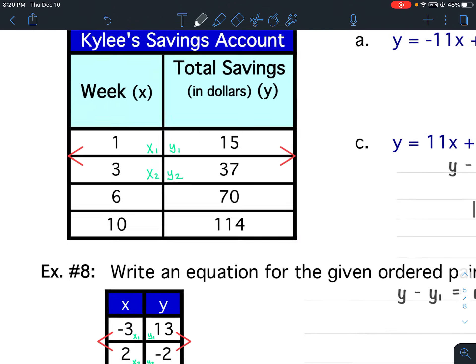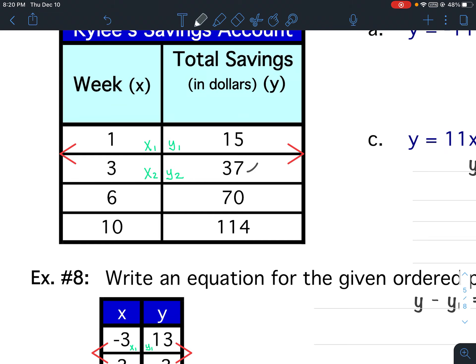So the first thing we're going to do is find the slope. To find the slope, I'm going to take 37 minus 15, and then I'm going to take 3 minus 1. So 37 minus 15 is 22. Over here we're taking 3 minus 1, because remember you go from the bottom up. 3 minus 1 is 2.